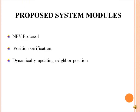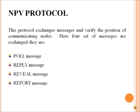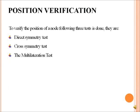Proposed system modules include: the NPV Protocol, Person Notification, and Dynamically Updating Neighbor Position. The NPV Protocol exchanges messages and verifies the position of communicating nodes. There are four sets of messages: Call Message, Reply Message, Reveal Message, and Report Message. Verification methods include Direct Symmetry Test, Cross Symmetry Test, and the Multilateration Test.